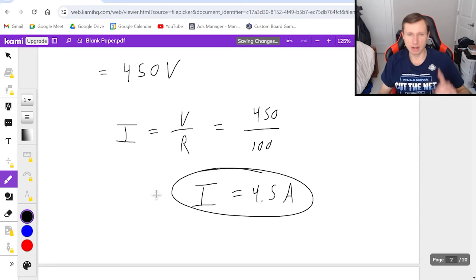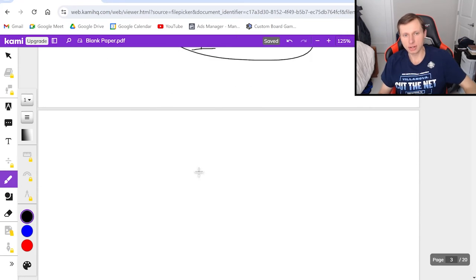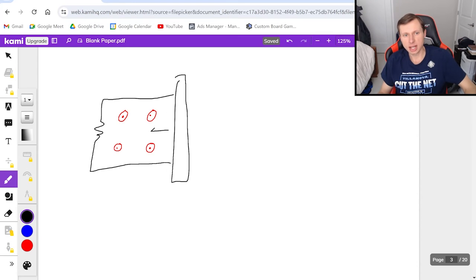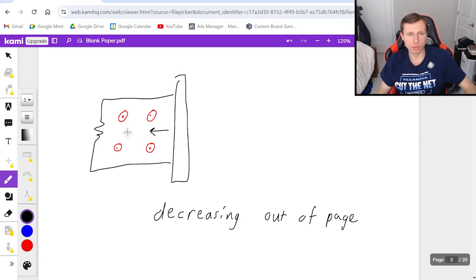And then one more thing, we still have to figure out the direction. Well, in order to figure out the direction, what I like to say is, I like to try and figure out the change in flux. And the change in flux is decreasing, the flux is decreasing out of the page, you could say. And the reason why is because as the bar moves in, the area is getting smaller, decreases the flux.